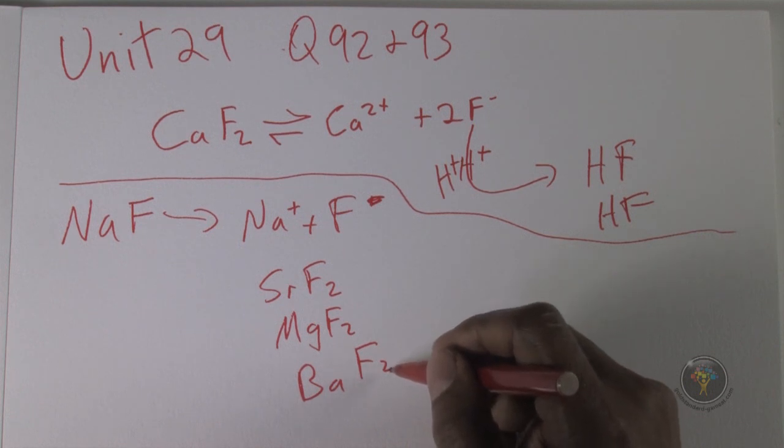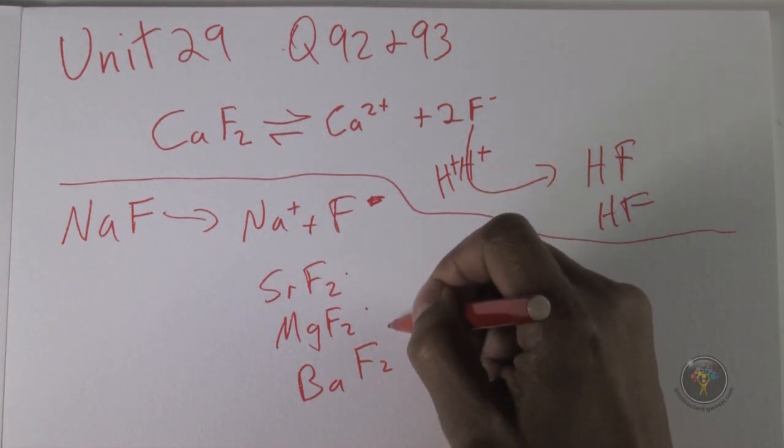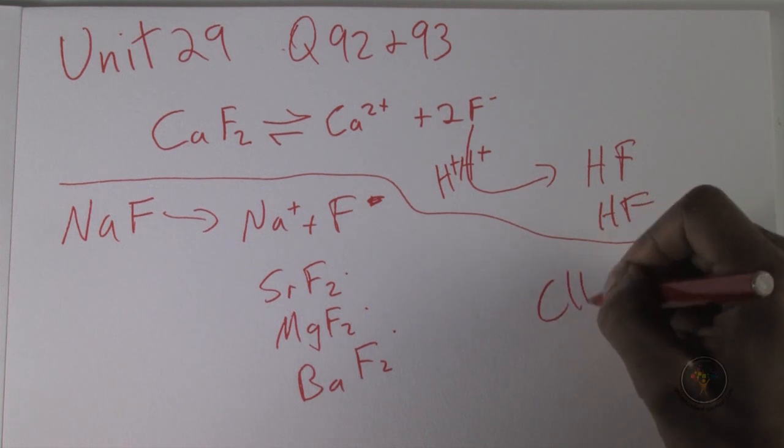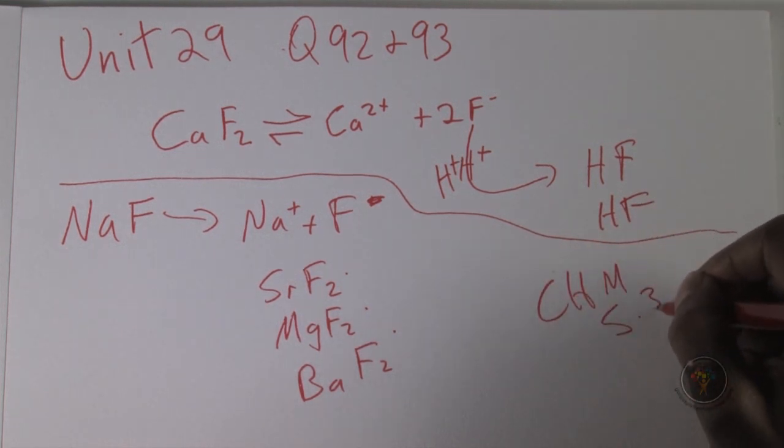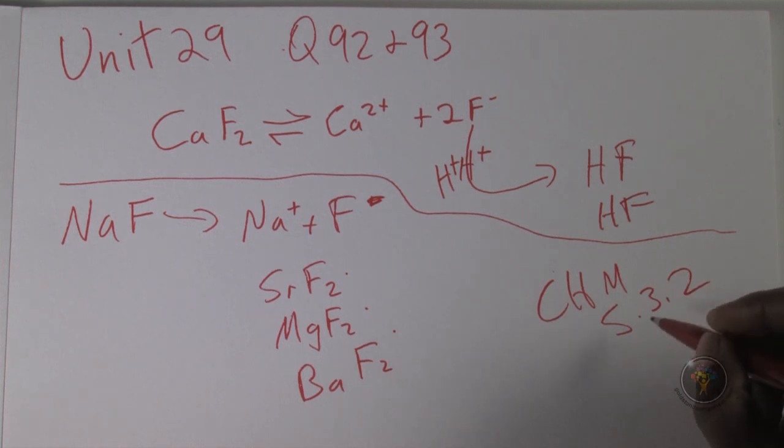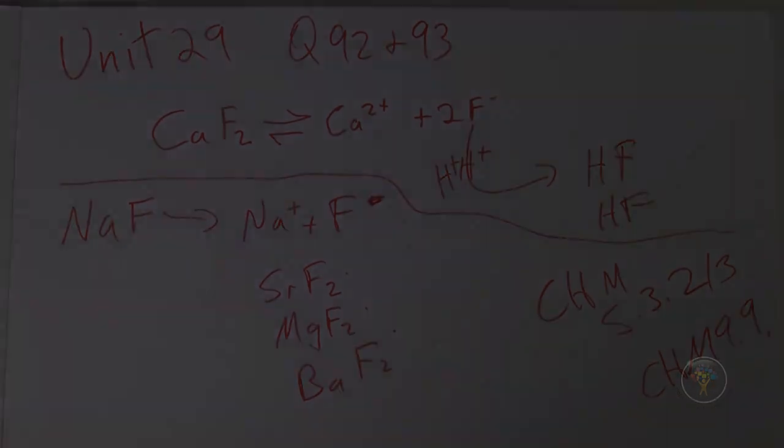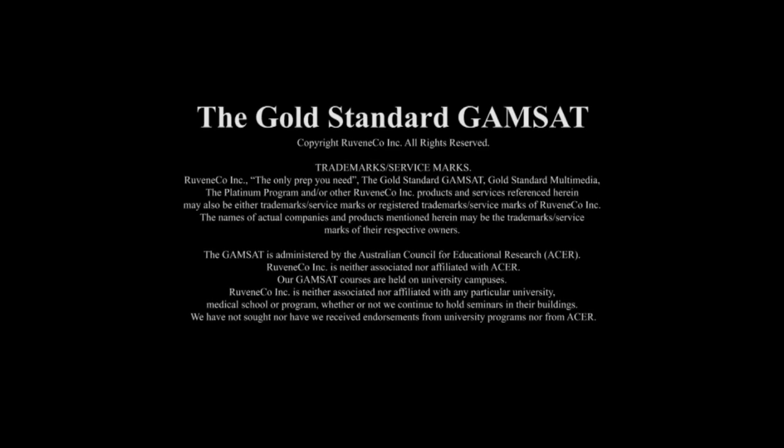When they ask for the order of precipitation, it would be 1, 2, and 3—answer choice C. If you want to read more about KSP, go to sections 5.3.2 and 5.3.3. For Le Chatelier's Principle, Chem 9.9.